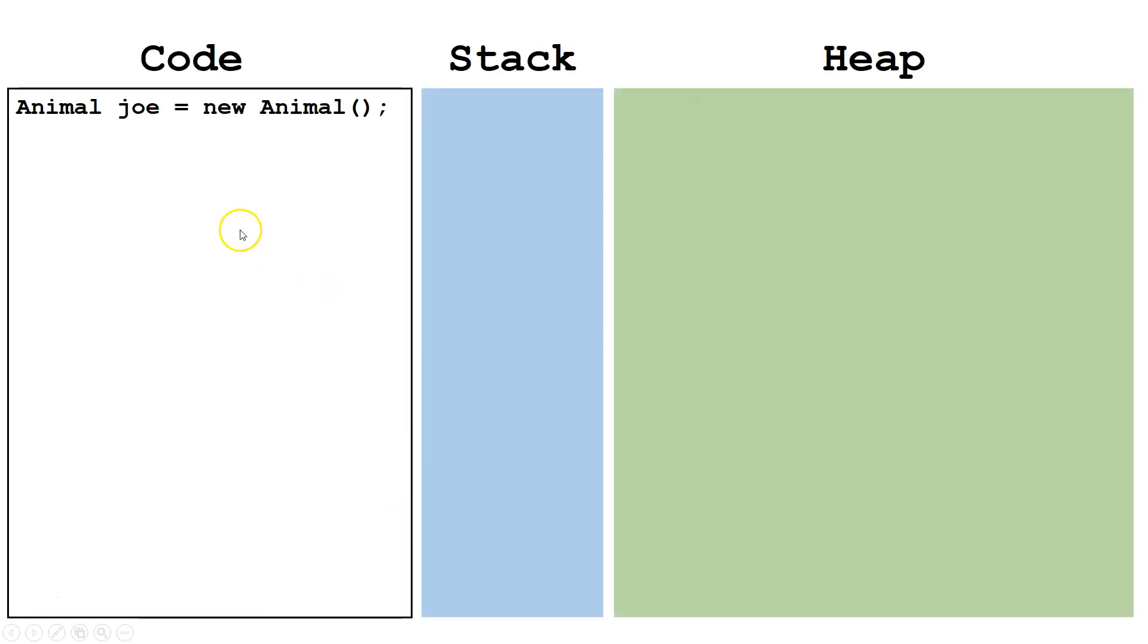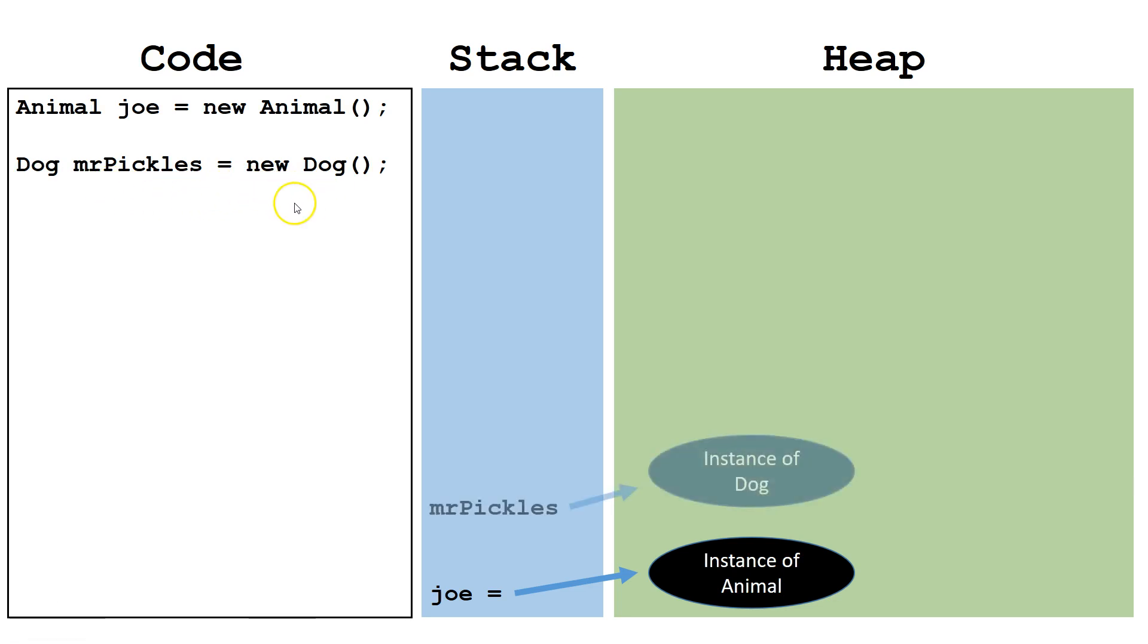Let's write some more code. Here's an example. We have Animal Joe equals new Animal. Next, we are creating a dog reference variable called Mr. Pickles and setting it equal to a new dog object. Joe is a reference variable of type Animal and it points to an object of type Animal. Mr. Pickles is a reference variable of type Dog and it points to an object of type Dog.